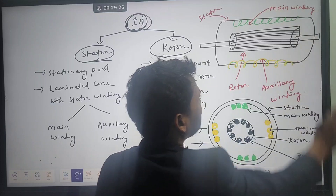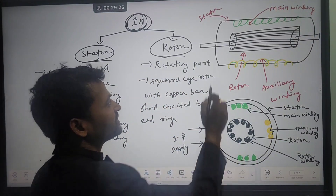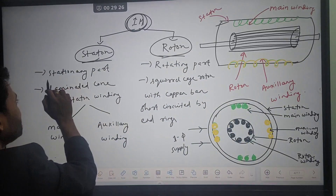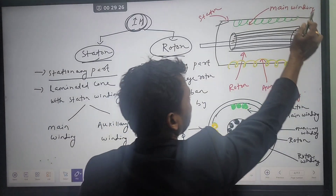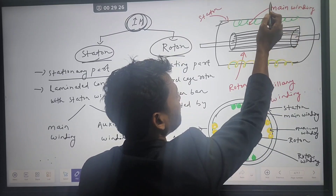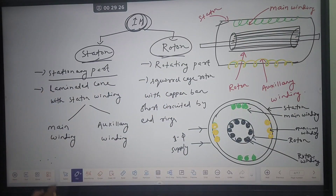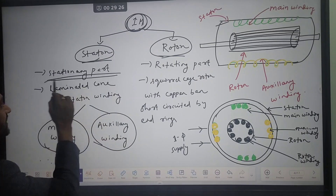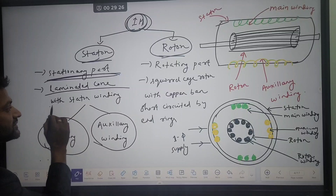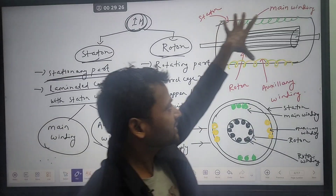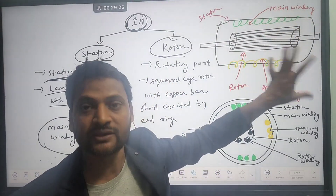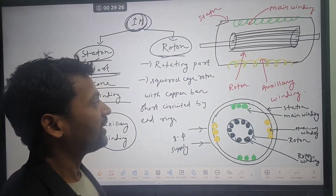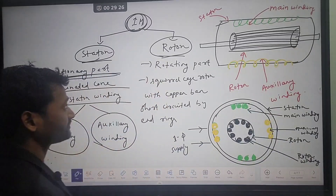This is the constructional diagram of the single-phase induction motor. The outer cover is called the stator and the inner part is called the rotor. The stator is the stationary part — it is fixed. It has two windings: one is the main winding and second is the auxiliary winding. The stator is a laminated core with stator winding, having two windings — main winding and auxiliary winding.